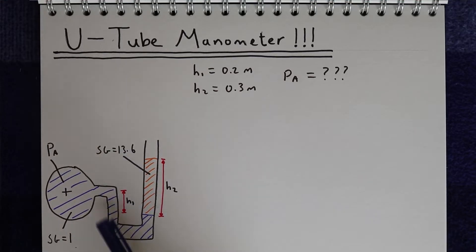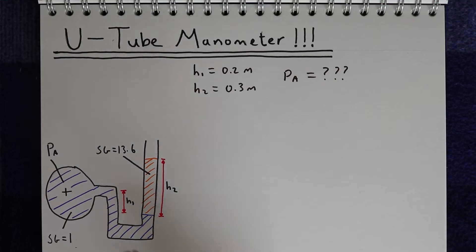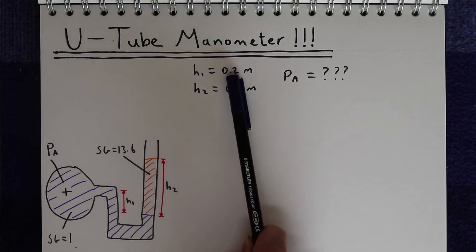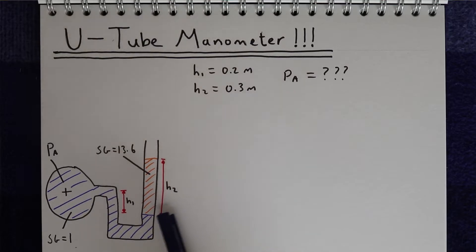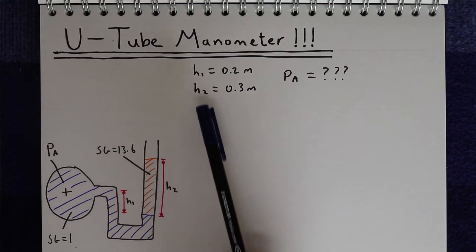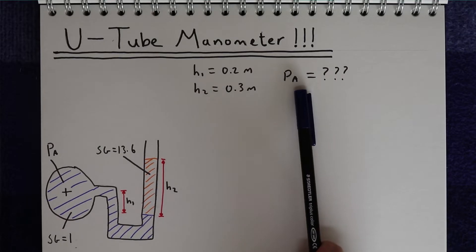By looking at the two heights of these fluids, we can measure the pressure in the pipe, Pa. For this example, the height of water H1 is 0.2 metres, the height of our mercury H2 is 0.3 metres, and we're trying to measure the pressure Pa.